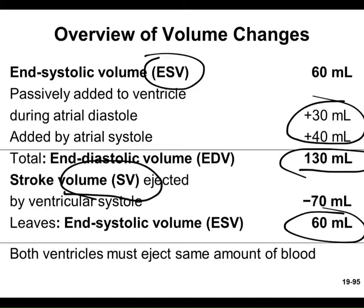A key point: in a normal heart, both ventricles must eject the same volume of blood. You might think the more muscular left ventricle ejects more, but because the circulatory system is closed with no bypass, if the two sides weren't pumping equal amounts we'd be in trouble very fast. We'll discuss what happens when one side is weaker — that's Chapter 20 material.